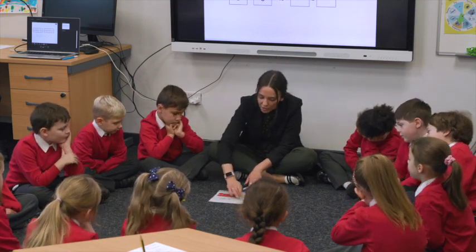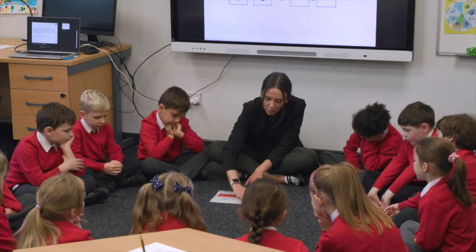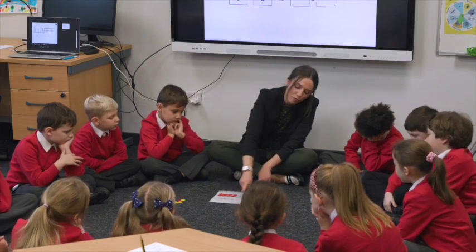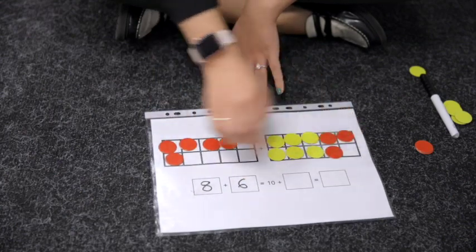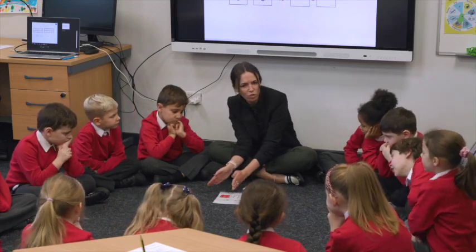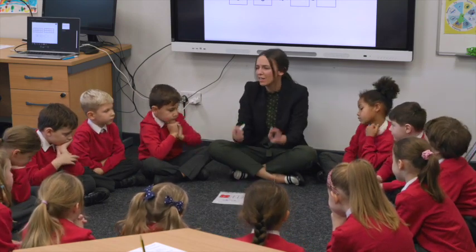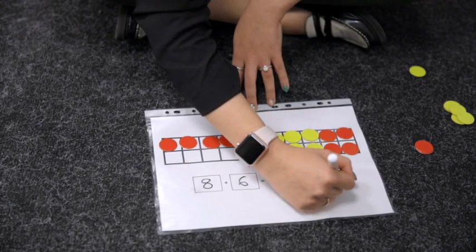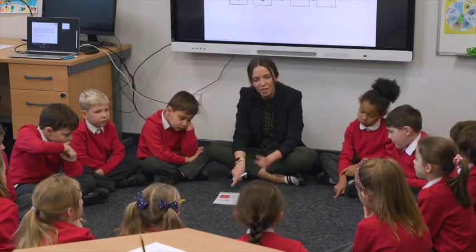Now let me show you the other way. So if we go back to eight add six — we'll rub that out. What I could do instead of moving them to this tens frame is move them over to this tens frame. One, two, three, four — so I've got my full 10 and I've got 10 add four. I've still got 10 add four, and it's still equal to 14 — exactly the same answer, exactly the same calculation, but done in two different ways.